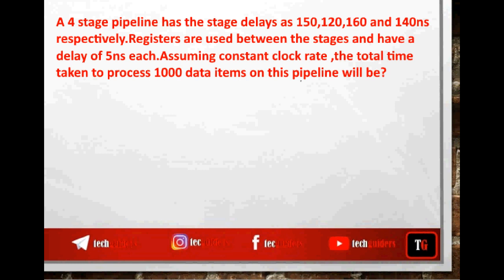A four-stage pipeline has stage delays of 150, 120, 160, and 140 nanoseconds respectively. Registers are used between the stages and have a delay of 5 nanoseconds each. Assuming constant clock rate, the total time taken to process 1000 data items on this pipeline will be?